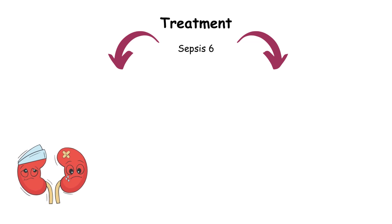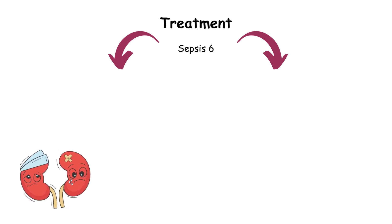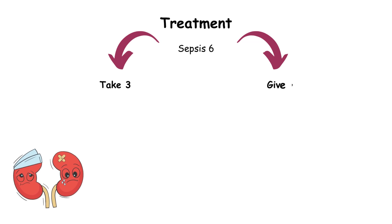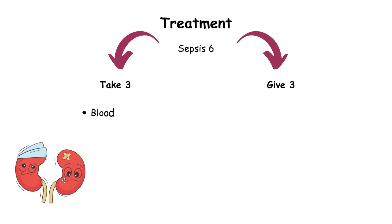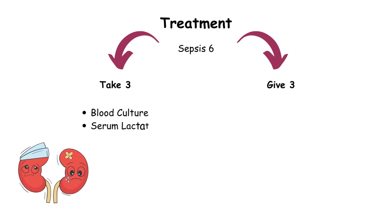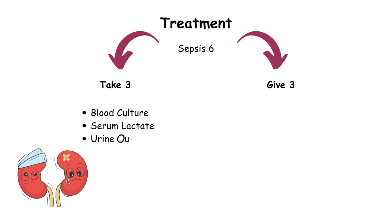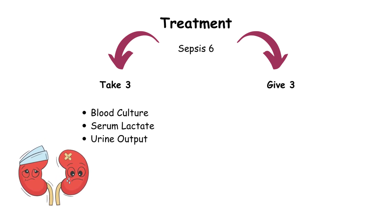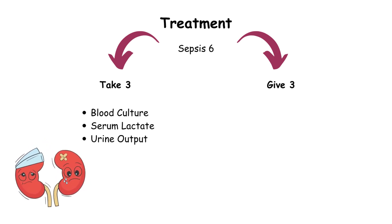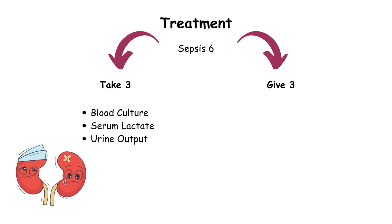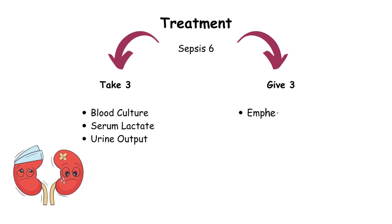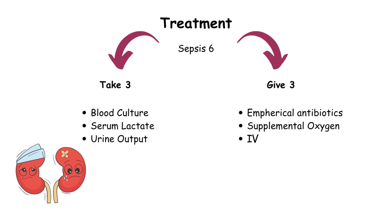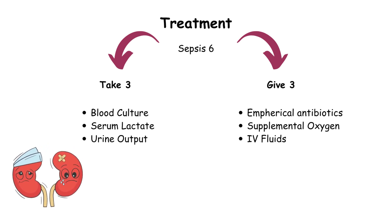In the treatment of sepsis, we follow six steps — three things to take and three things to give. We take blood cultures before starting antibiotics, but delivering antibiotics should not be delayed for taking blood cultures. We also monitor serum lactate and urine output. Patients should be given empirical antibiotics, IV fluids, and supplemental oxygen.